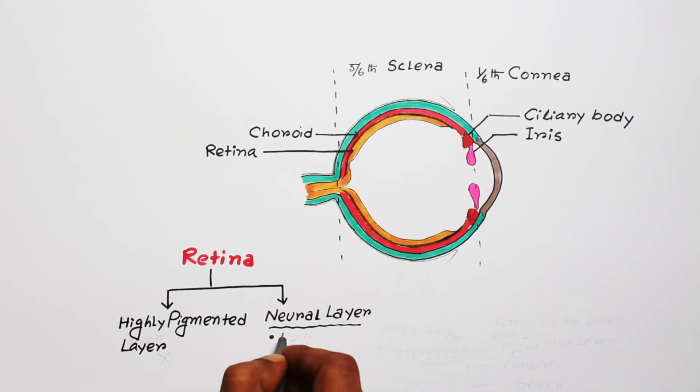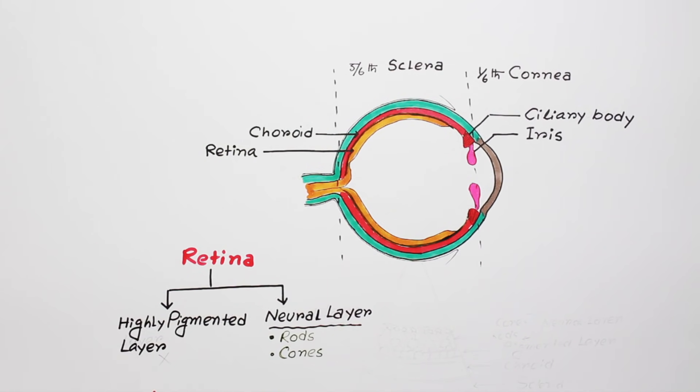Now, the interesting point you should remember: rods and cones are not present in the pigmented layer. They are actually present in the neural layer.